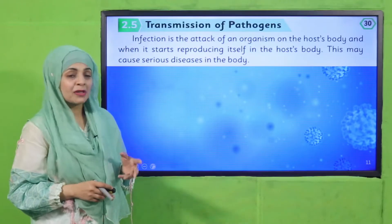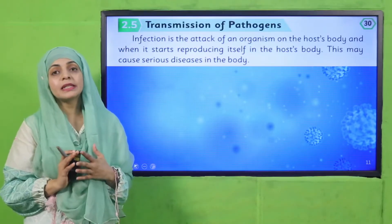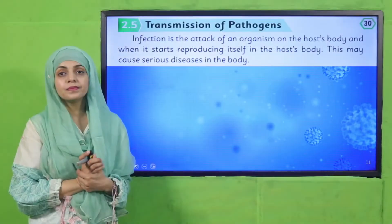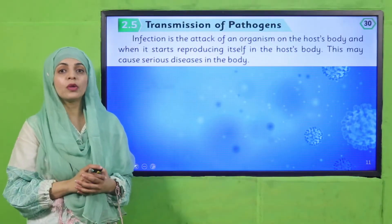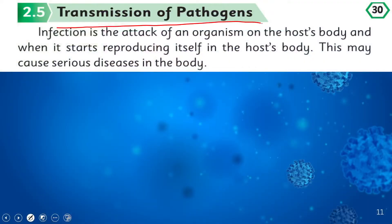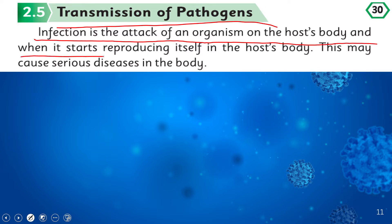My dear students, now we cover Transmission of Pathogens. Quickly open page number 30 in your Science 5 books. Let's read together: Transmission of Pathogens — infection is the attack of an organism on the host's body, and when it starts reproducing itself in the host's body, this may cause serious diseases.